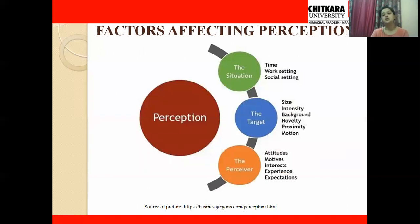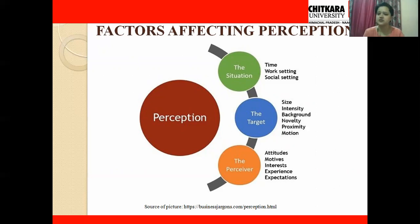Next are the factors affecting perception. Not every time will we perceive things accurately as they should be perceived — some factors affect our perception. These factors can affect perception in three ways: on the situation, on the target (the stimulus itself), and on the perceiver (the individual). Regarding situation: if the time, work setting, or social setting are not appropriate — for example, it is nighttime and dark — we won't be able to see things properly and therefore won't perceive them properly.